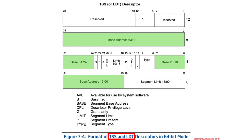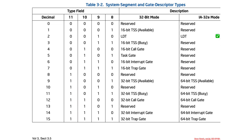There are two more descriptor types to cover: the TSS, which we'll come back to, and the LDT. In the GDT there's an entry that points to the LDT, and that entry has been expanded to 16 bytes so that the base address, which previously could only hold a 32-bit value, is expanded to a 64-bit value. The extra bytes give us a full 64-bit address specifying where in memory the LDT can be found. System descriptors — LDT and TSS — are all 16-byte values in 64-bit mode, taking up two 8-byte slots, and these can also appear in the LDT itself.